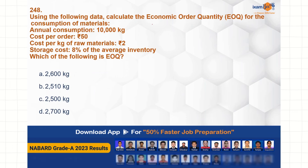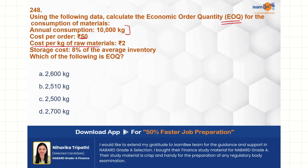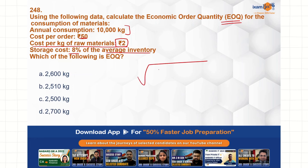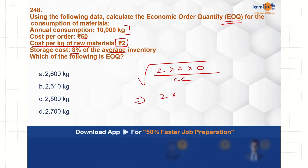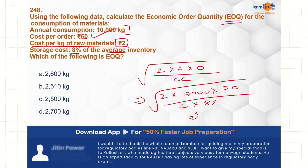Using the following data, calculate the economic order quantity (EOQ). Annual consumption is 10,000 kgs, cost per order is 50 rupees, cost per kg of raw material is 2 rupees, and storage cost is 8% of the average inventory. EOQ = √(2 × annual demand × ordering cost ÷ carrying cost). Annual consumption 10,000, ordering cost 50, carrying cost = 8% of 2 rupees per kg. The answer is 2,500 kg — option C.